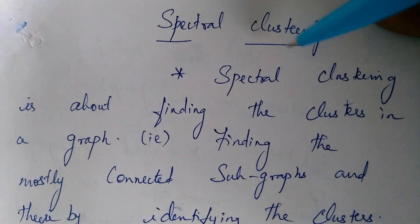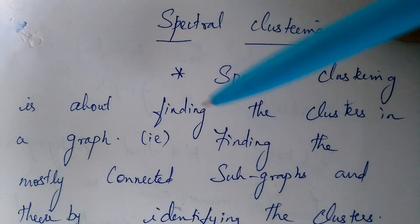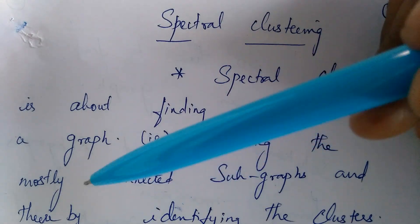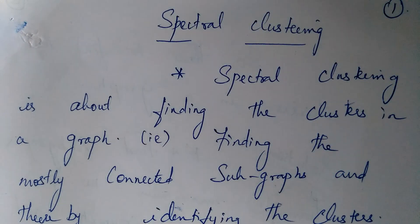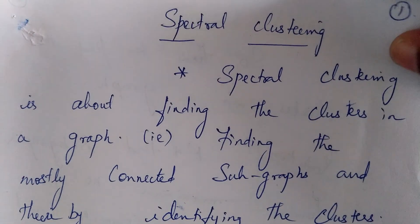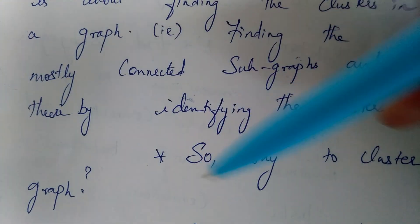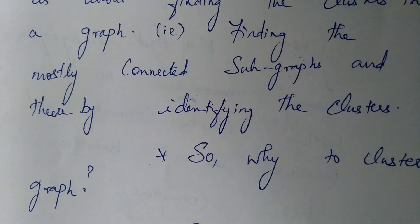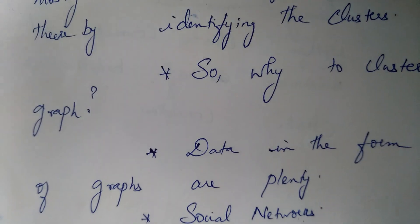Today we are going to look at the spectral clustering technique. Spectral clustering is an unsupervised technique used to find clusters in a graph — it is meant for data represented in the form of a graph. The idea is to find the mostly connected subgraphs from the given graph, and we will see how spectral clustering helps us do that.